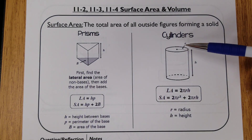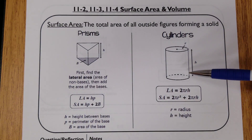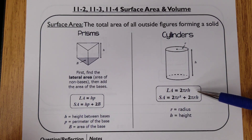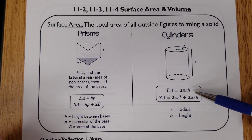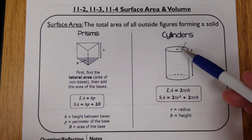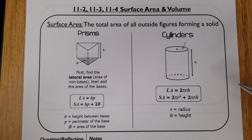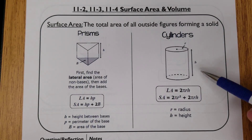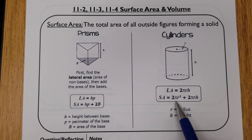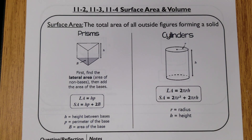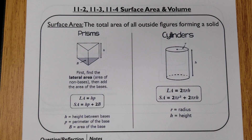A cylinder uses the same idea as a prism, but the bases are circles, so we alter the formula. Two pi r is the circumference — the perimeter of the circle — times the height gives the lateral area. We then add two circles, top and bottom, to make the full cylinder surface area. Just like in the previous section, these problems are pretty much formula then plug in numbers.